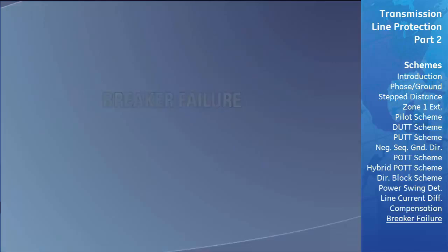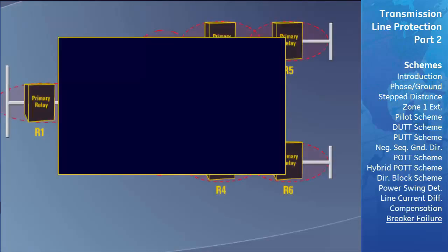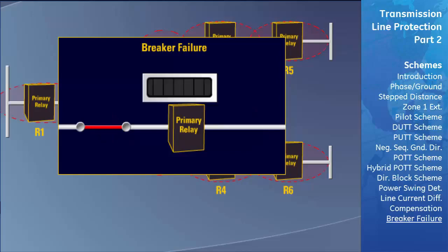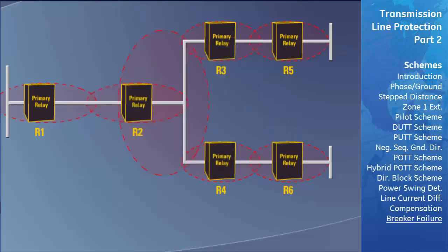Let's look at an example of a breaker failure protective element. In this example, the protective relays operate correctly, but the associated circuit breaker fails to clear the fault due to some malfunction within the breaker or its control circuits. The fault remains on the system until some other means is used to clear it. The primary or backup relays start a timer once a fault is detected. The timer then times out and sends a trip signal to all breakers that can feed the failed breaker with power.